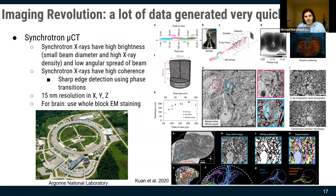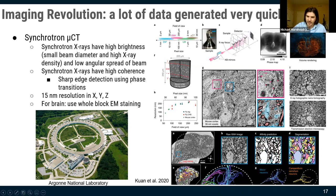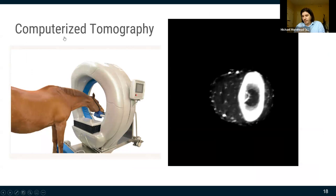Researchers are also using synchrotrons — electrons spun very fast around a large ring and slammed into targets — to achieve electron-microscope levels of resolution through micro CT. The big advantage of micro CT and CT is that they're non-destructive: you image large volumes at high resolution but still have the sample afterward. It'll be very interesting over the next five years to see what people do with synchrotron micro CT.